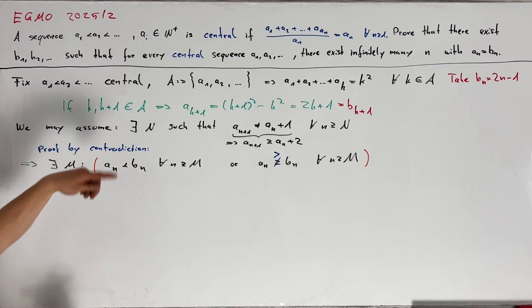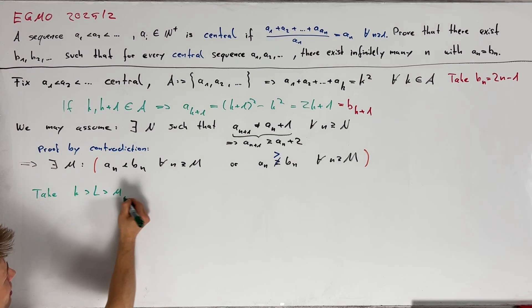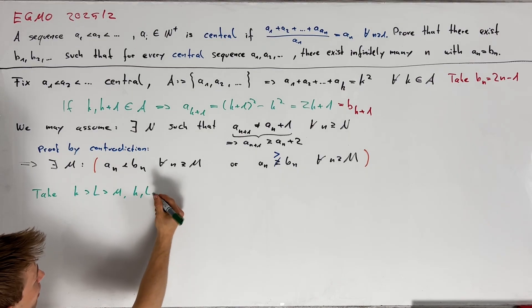Now we want to bring this together with the definition of central sequences to our contradiction. And for this take k greater than l greater than m where k and l should both be elements of A.